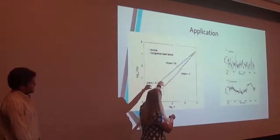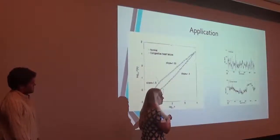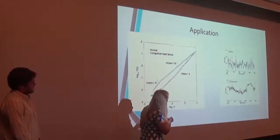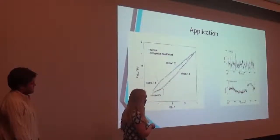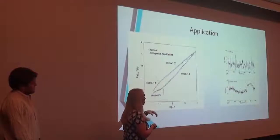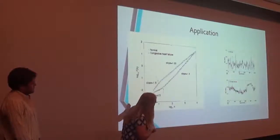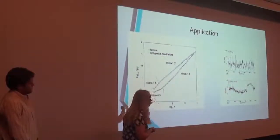This is the normal heart. And so because it has a smaller alpha value, that means it's more variable. So you can see it's going up and down and up and down. But then here, the slope of 1.3, the congestive heart has a less variable heart rate. So you can see that the length of that RR interval is much smaller.